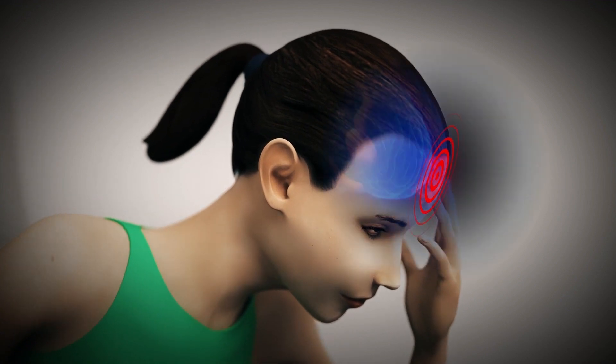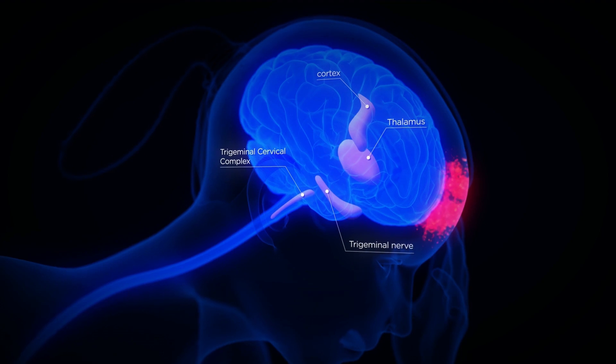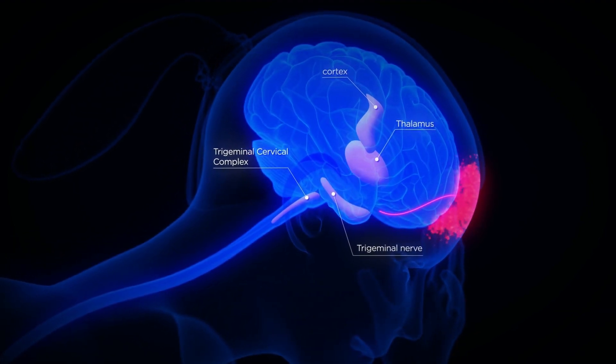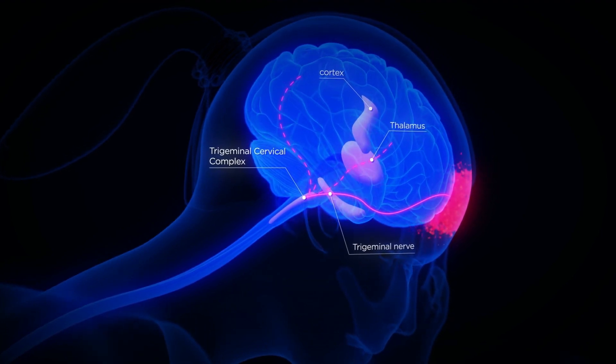A migraine headache involves an inflammatory activation of the trigeminal vascular system, which conveys nociceptive information from the head and face through the trigeminal nerve and the trigeminal cervical complex to brain regions involved in pain processing.